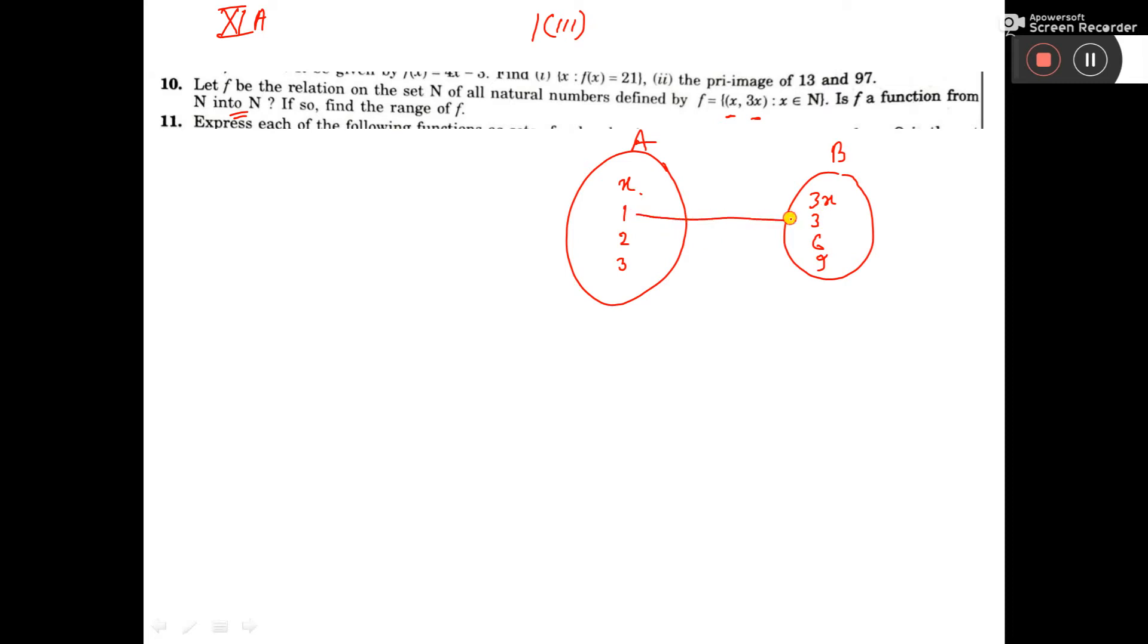So 1 corresponds to 3, 2 corresponds to 6, 3 corresponds to 9. If I define f(x) equals 3x, then X equals 1 gives 3, X equals 2 gives 6. So this is the function.